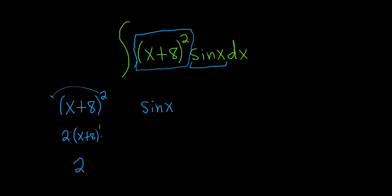Because the derivative of x+8 is 1. The derivative of x is 1, and the derivative of 8 is 0. So this is just 2 times 1, so it's 2. Taking the derivative again, we get 0.